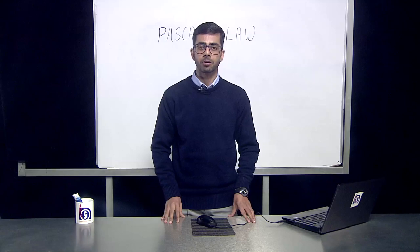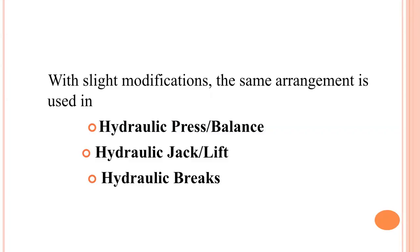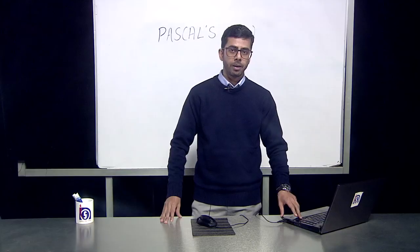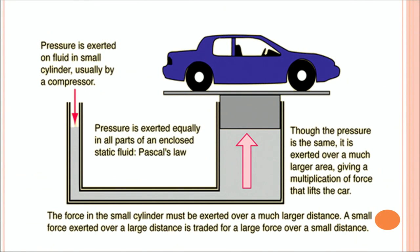Turning towards the applications: the basic uses are the hydraulic press, the hydraulic balance, and the hydraulic jack. For the hydraulic jack, a small force is applied on one side of the cylinder and a larger force is produced on the other side of the platform, which is connected by the liquid, allowing us to easily lift a car placed on the platform. The force in the small cylinder must be exerted over a much larger distance — a small force over a large distance is traded for a large force over a small distance.